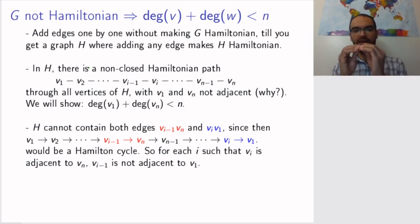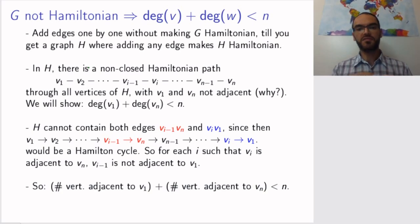This means that for each vᵢ that has an edge to vₙ, the vertex to the left of it has no edge to v₁. This means that the number of vertices adjacent to v₁ plus the number of vertices adjacent to vₙ is smaller than n, because each vertex that is adjacent to v₁ forbids the vertex next to it from being adjacent to vₙ. Since v₁ and vₙ are not adjacent, our inequality will be strict. Each edge from any vᵢ to v₁ forbids vᵢ₋₁ from having an edge to vₙ.